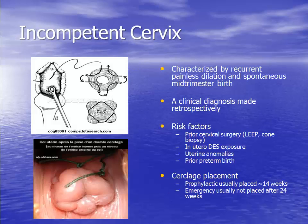A related diagnosis to preterm labor is incompetent cervix. This is characterized by painless dilation of the cervix during the second trimester that leads to fetal loss. If incompetent cervix is diagnosed before 24 weeks, a stitch called a cerclage may be placed into the cervix to attempt closure and prolongation of the pregnancy. Women who present with a history of incompetent cervix in a prior pregnancy may have a cerclage placed prophylactically around 14 weeks of gestation.